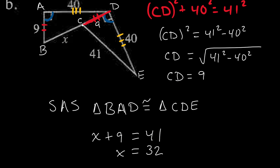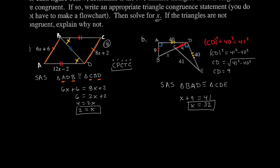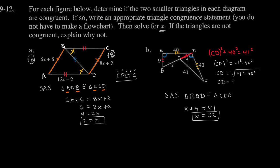So x is 32, and that's what they were asking for. That's it for question 12. Both pairs of triangles turned out to be congruent to each other, and both were congruent by side-angle-side.